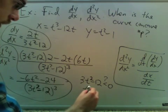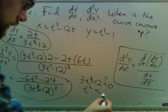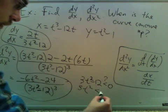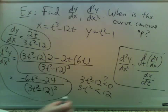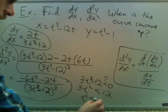Well, it happens when t squared, 3t squared is less than 12, or t squared is less than 4.